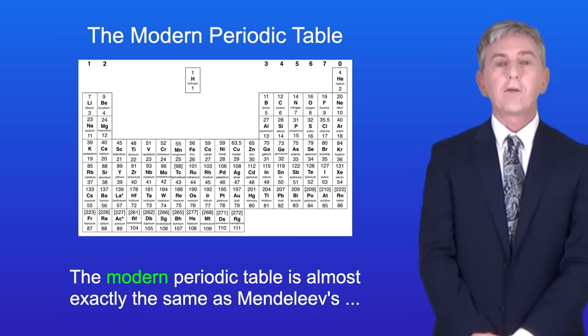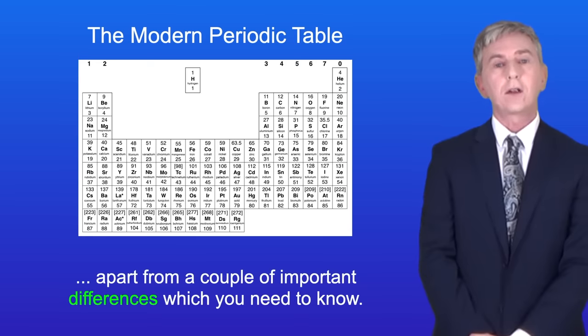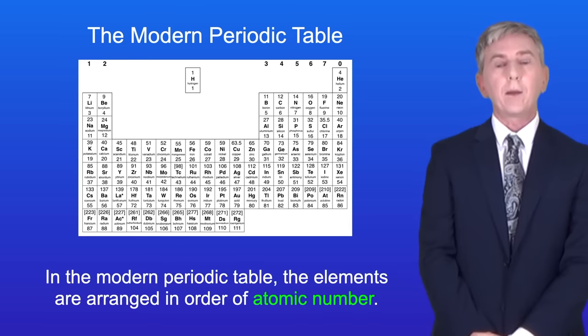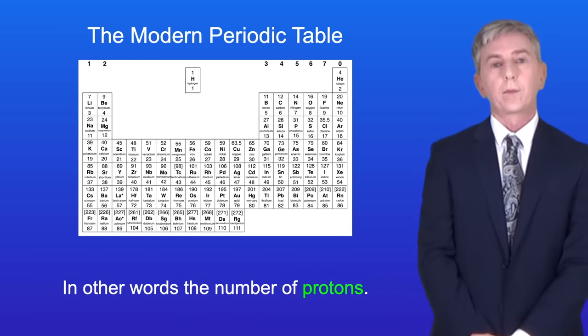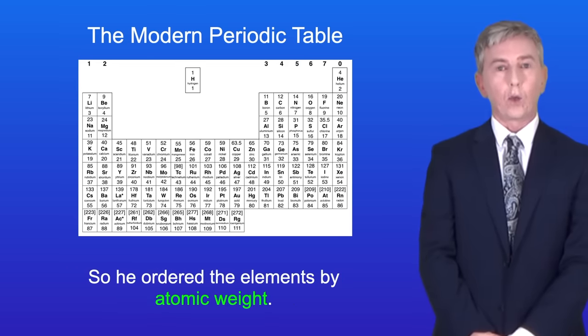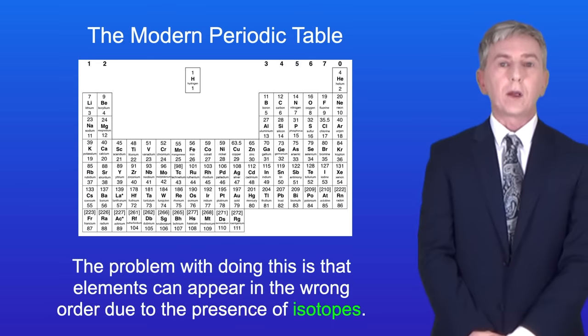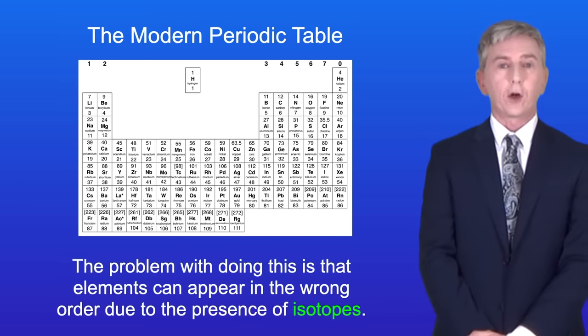The modern periodic table is almost exactly the same as Mendeleev's, apart from a couple of important differences which you need to know. Firstly, in the modern periodic table, the elements were arranged in order of atomic number, in other words, the number of protons. When Mendeleev developed his table, protons had not been discovered, so he ordered the elements by atomic weight. The problem with doing this is that elements can appear in the wrong order, due to the presence of isotopes.